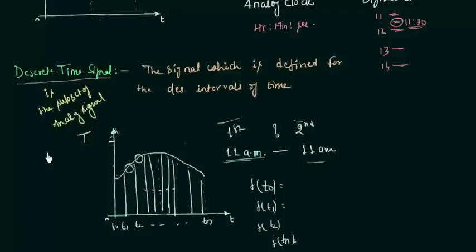We are already pushing the time. We have learned two things: the first one is the analog signal, and the second one is the discrete time signal. All real life signals are analog signals.